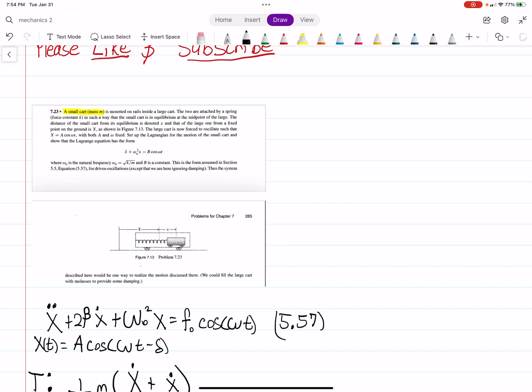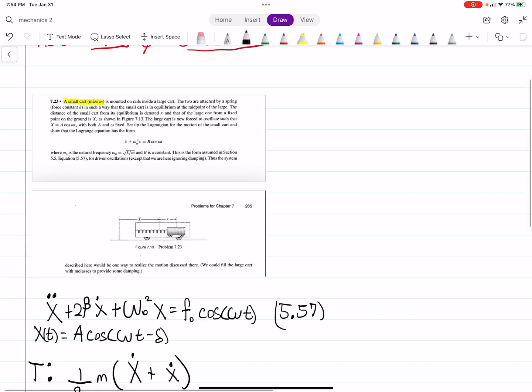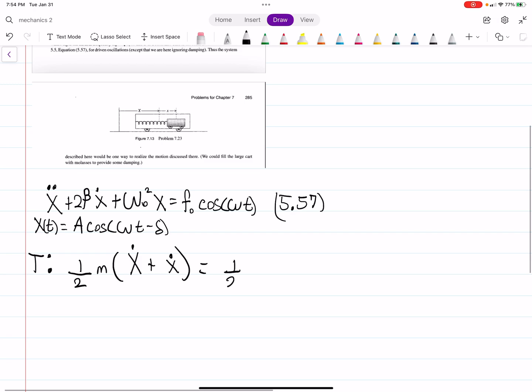What we have then is the large cart is forced to oscillate with A cosine omega T. So we have that, and then we'll have X dot being one half M A cosine omega T. And we want the derivative of that, actually. If we take the derivative, that'll be minus A omega sine of omega T. That is going to be your derivative. So we have minus A omega sine omega T plus X dot all squared. That's the velocity term.